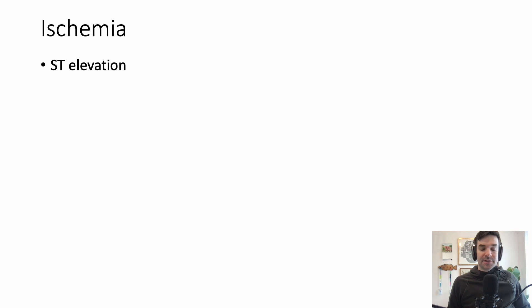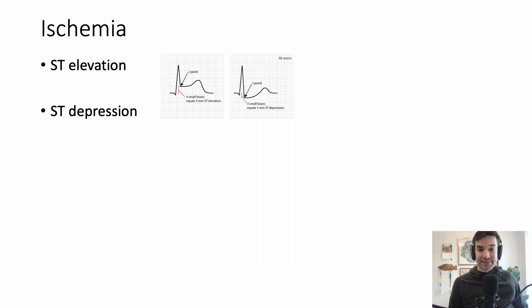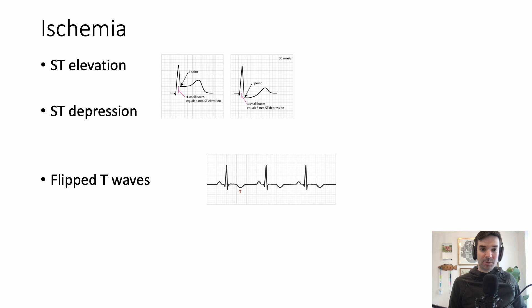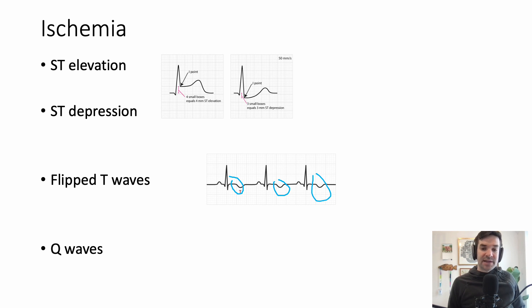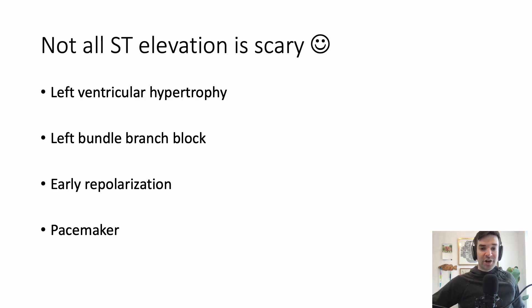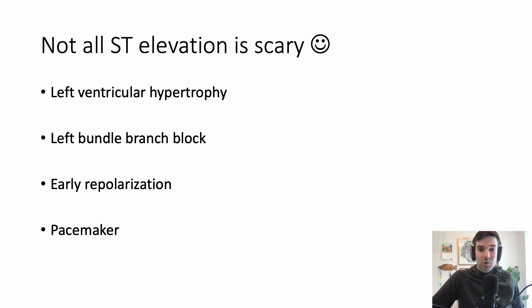Next, we're looking for signs of ischemia. Is there ST elevation or ST depression? Both are signs of ischemia. You can pause the screen and zoom in to see exactly how to tell if there's ST elevation or depression. Flipped T waves — in general, inverted T waves are abnormal. You can see a flipped T wave here; it's upside down. You can see this normally in V1, but in other leads it's typically abnormal. And then Q waves — this is a sign there's probably been an old infarct; you can see this very deep Q wave here. Not all ST elevation is scary: it commonly comes from left ventricular hypertrophy, a left bundle branch block, early repolarization, or if the patient has a pacemaker.